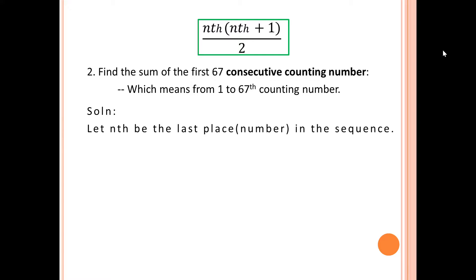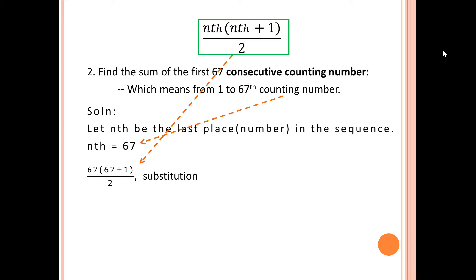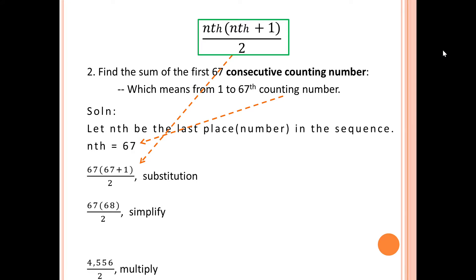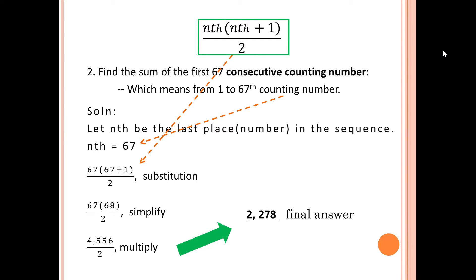In this problem, the last place number is 67, so n = 67. By substitution, we compute 67 times (67 + 1) over 2. Adding gives 68, and multiplying gives 4,556. Dividing by 2, the quotient is 2,278, which is the final answer.